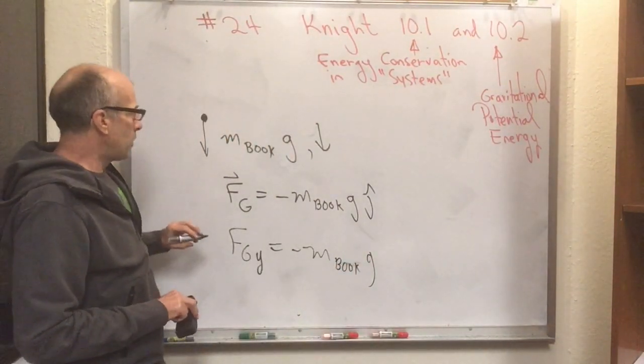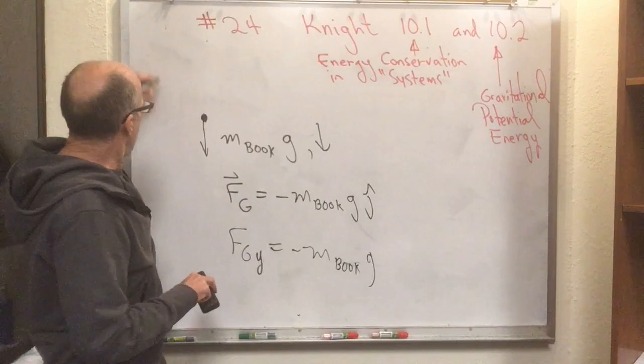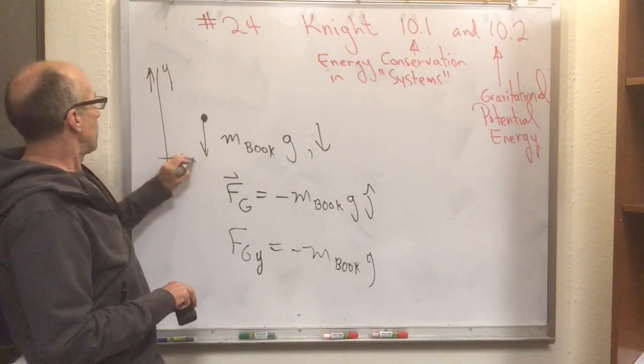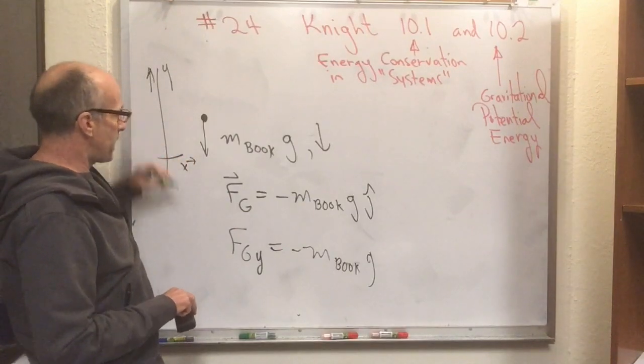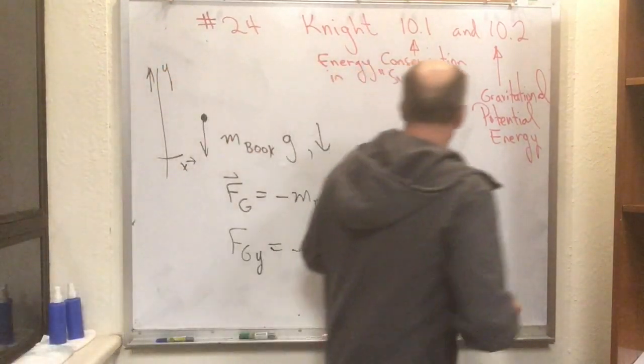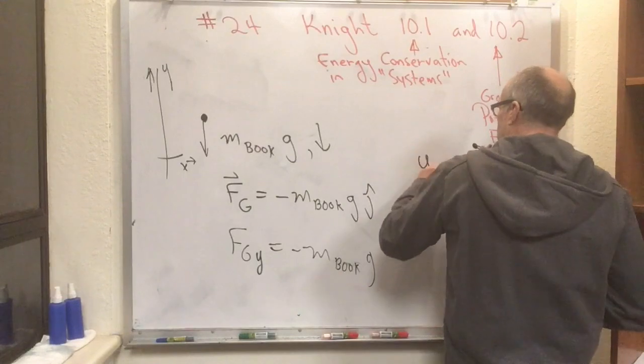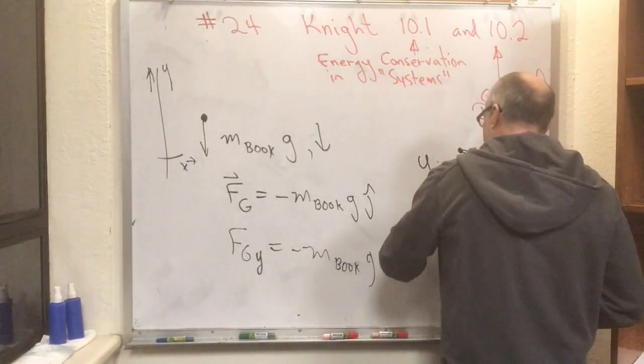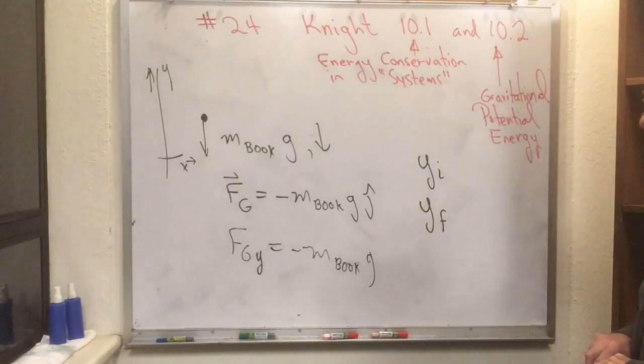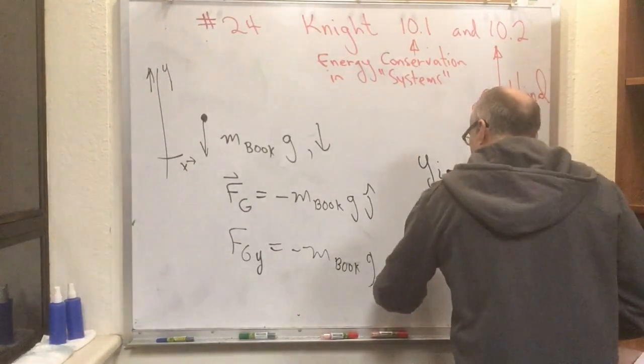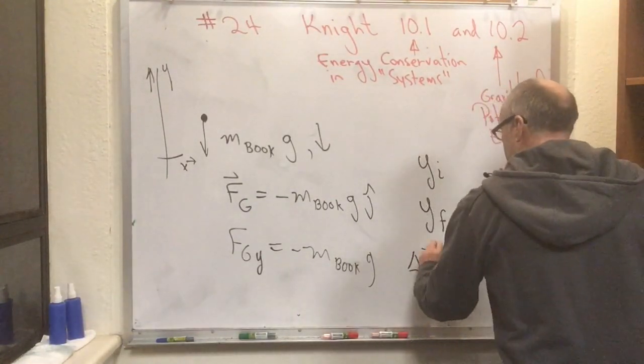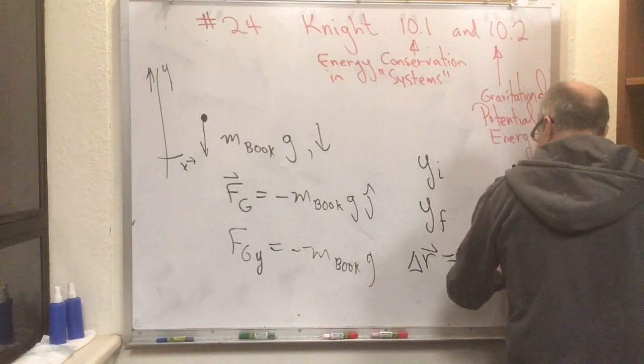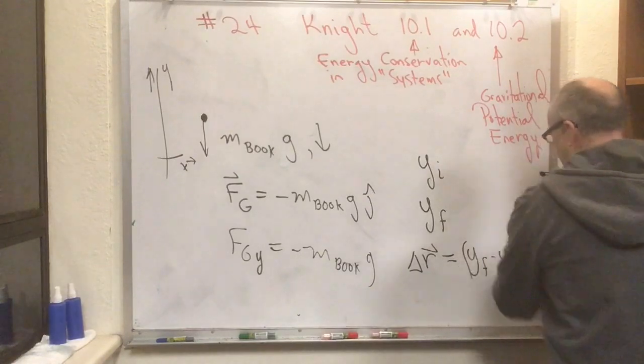And now, if we call this the Y axis here, this would be the X axis, and the book is only moving up and down, we can calculate the work. We have a Y initial, which is whatever the height of the book was initially, and we have a Y final, which is whatever the height of the book was finally, and we have a delta R for the book, which is equal to Y final minus Y initial times J hat.